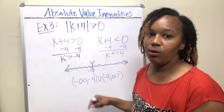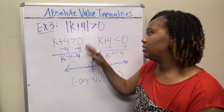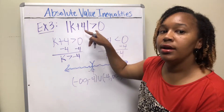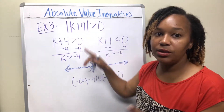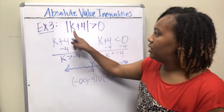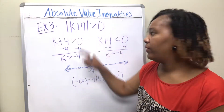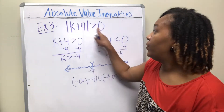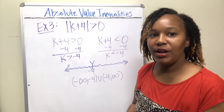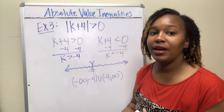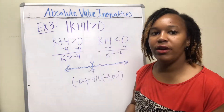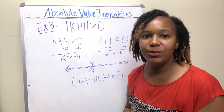Negative 4 is the only number that won't work, because |k + 4| > 0 is asking when the absolute value is bigger than zero — which is always true except when it equals zero, and k = −4 makes it equal zero. If the inequality had been ≥ 0 (greater than or equal to), then all numbers would be the solution. Since there's no line underneath, you must exclude the number that makes it equal zero.